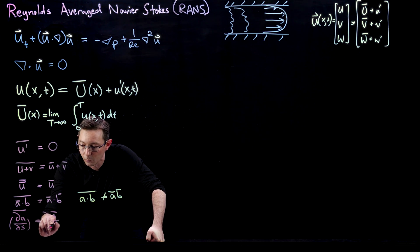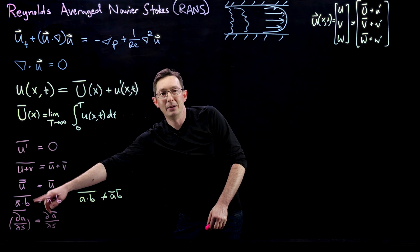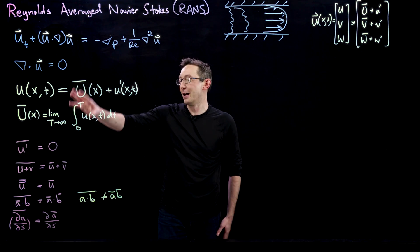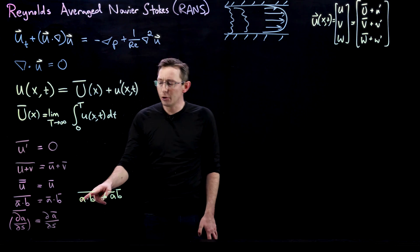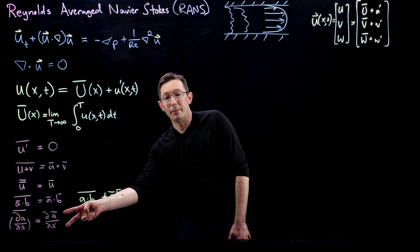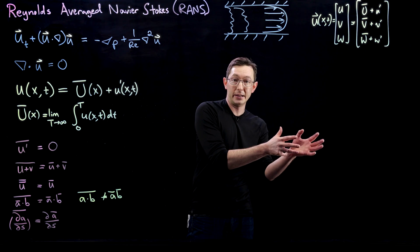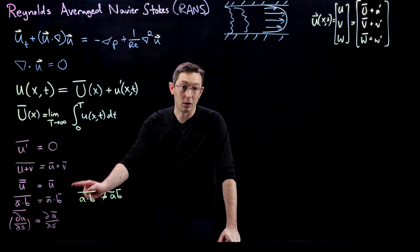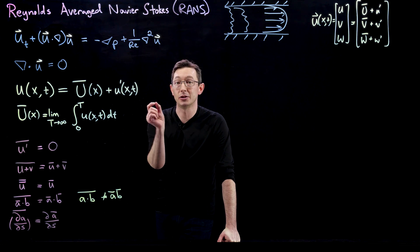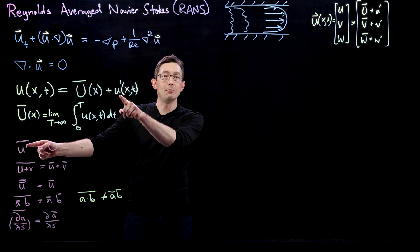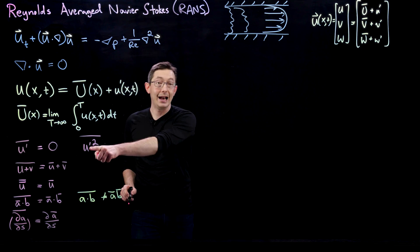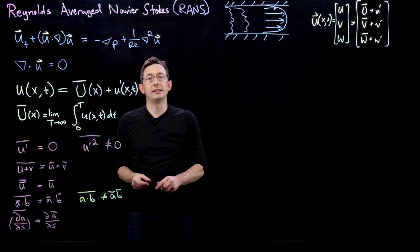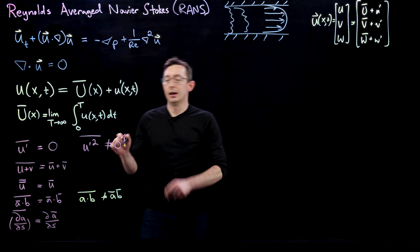So the two most important properties are: the derivative property — time-averaging a derivative equals the derivative of the time average — and the inequality for products — the time average of (a·b) is NOT the same as the time average of a times the time average of b. Notice that u prime has zero mean but it does NOT have zero variance: the time average of u prime squared is not equal to zero. This is an incredibly important property.